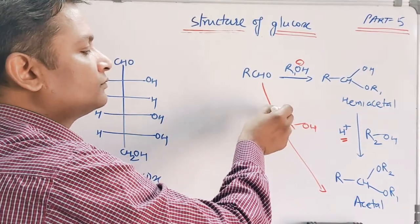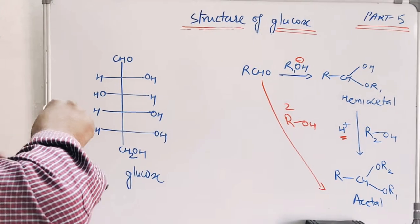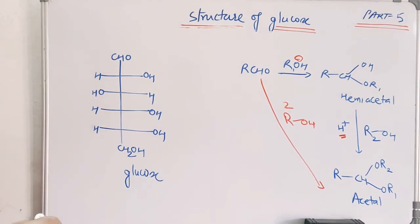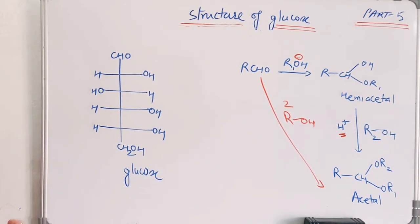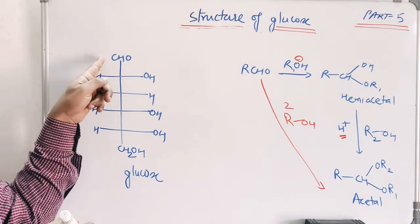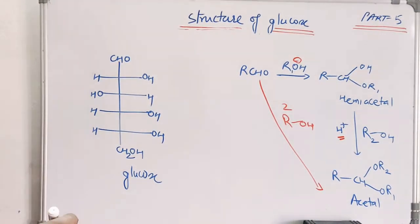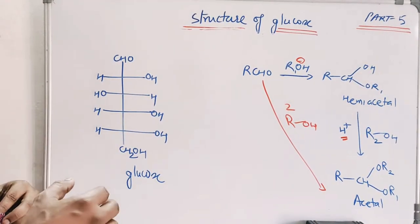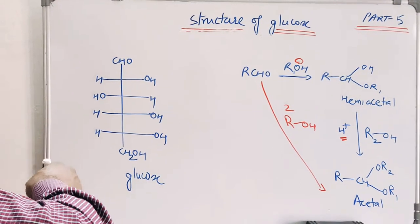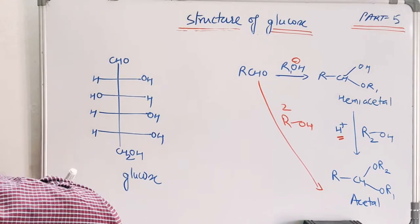We should know that aldehyde to acetal conversion always requires two moles of alcohol. But in our previous video we discussed that in the case of the glucose molecule, only one mole of methanol was consumed to give the formation of a methyl acetal molecule. This was surprising — if glucose is an aldehyde, it should react with two moles of alcohol, but it was reacting with only one mole. This compelled researchers to think otherwise.